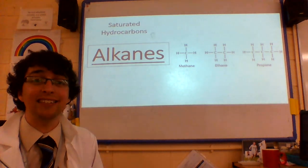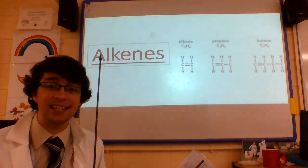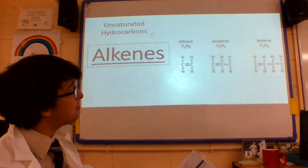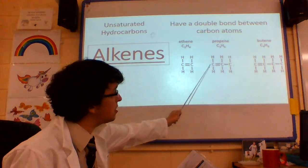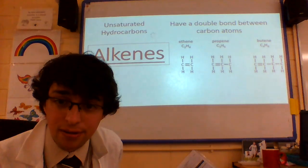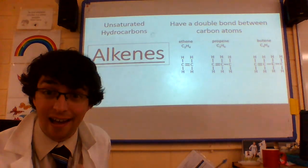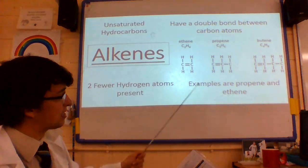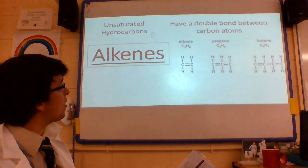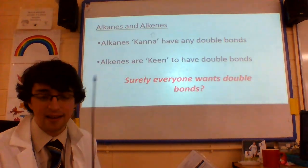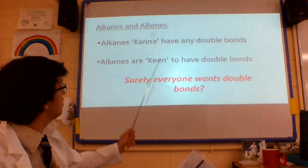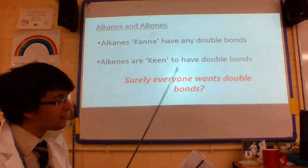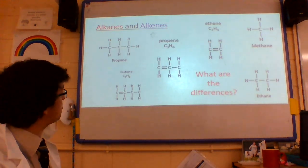Notice the 'ane' ending. And an alkene — slightly different — we've got unsaturated, because we have double bonds between at least one of the carbons with another carbon. We've got fewer hydrogen atoms present, and examples are propene and ethene. So to go back to this idea: alkanes cannot have any double bonds, whereas alkenes are very keen to have double bonds.